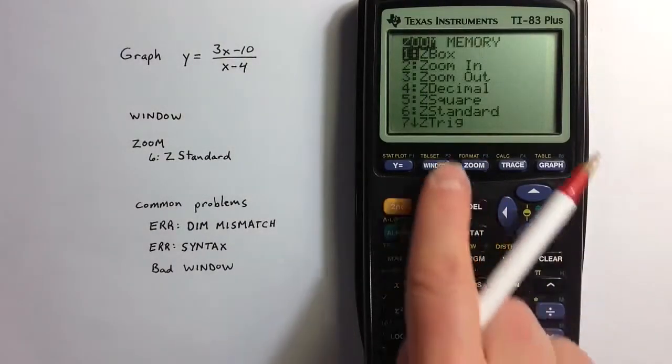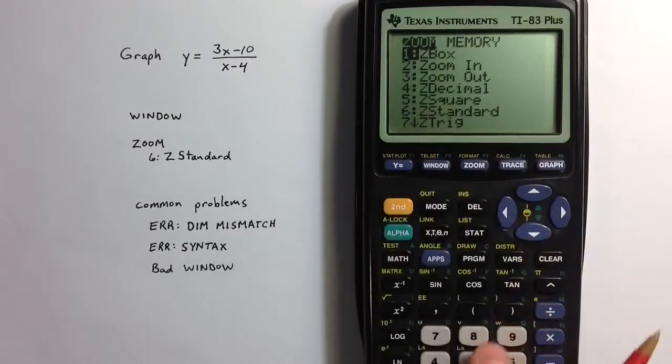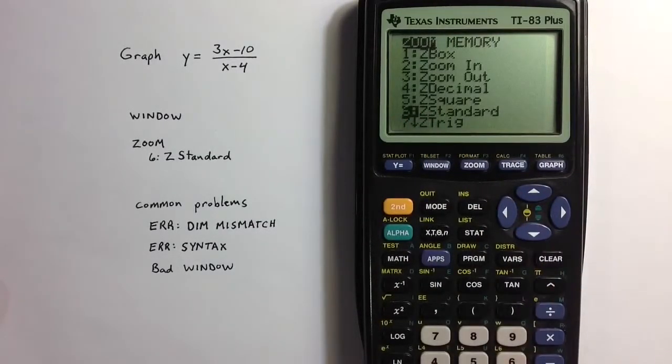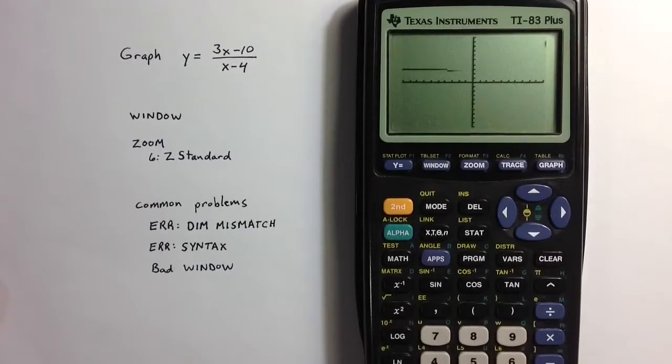If I choose zoom option 6, the standard window will go back to the negative 10 by 10 and we'll see that problem again.